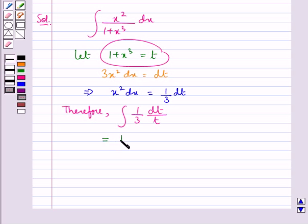This is equal to 1 upon 3 integral dt over t, and this is further equal to 1 upon 3 into log modulus t plus c.